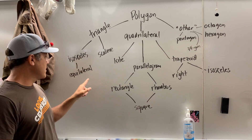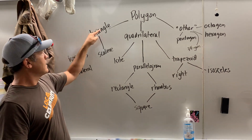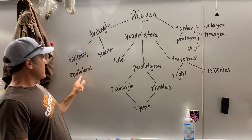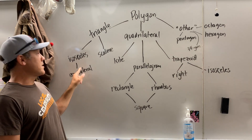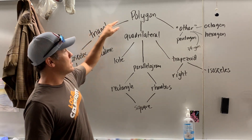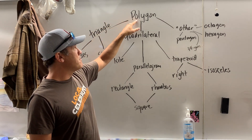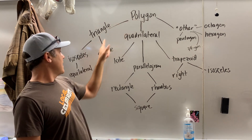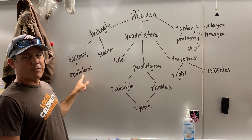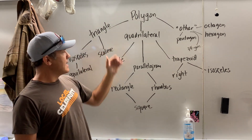In other words, if you come down here and follow the line, every equilateral triangle is isosceles. It's also a triangle, it's also a polygon — but every polygon doesn't have to be an equilateral triangle.